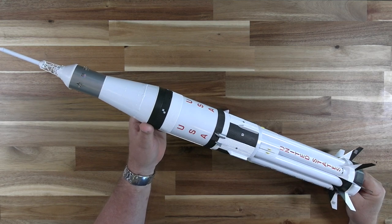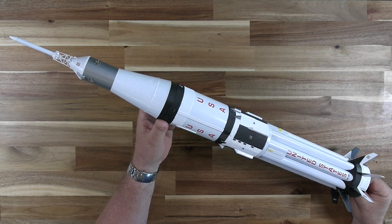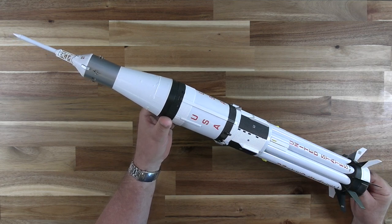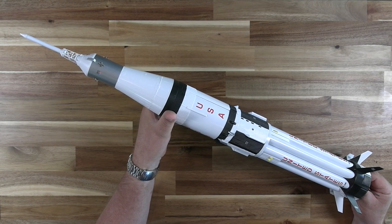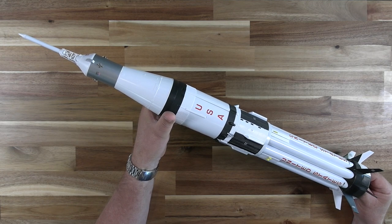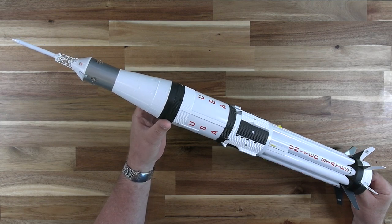Here's our completed Saturn 1B model. Keep in mind that the skills used for this project can be used for a whole bunch of different models. If you have an Estes Saturn 5 or Skylab kit, the techniques we've used here are identical for those kits as well as the Apogee Saturn 5 and 1B twins. Thanks for watching and good luck on your Saturn project.